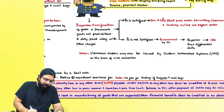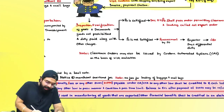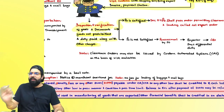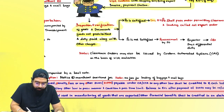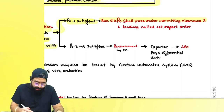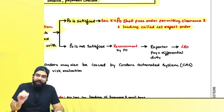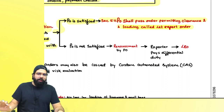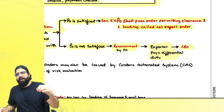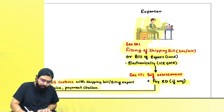The custom officer will do inspection of goods and verify documents. If goods are not prohibited, all duties are paid along with all charges, and the proper officer is satisfied, he will pass an order permitting clearance and loading — known as a let export order under section 51. If not satisfied, he will do reassessment, tell you to pay the differential, and then give the let export order.